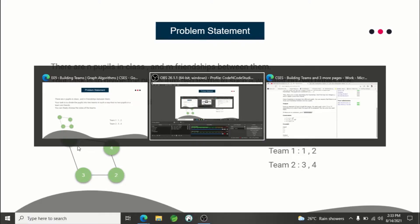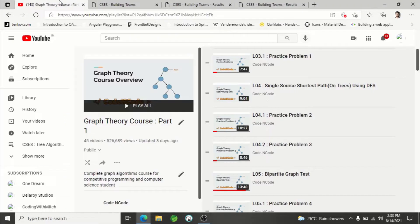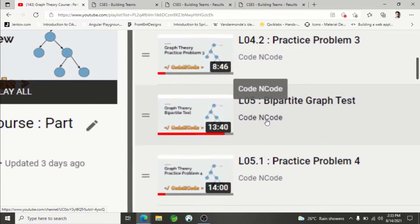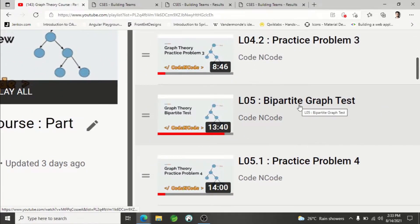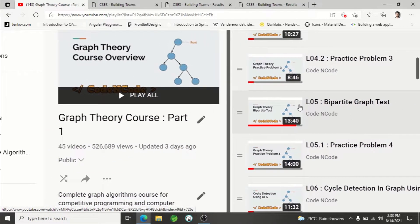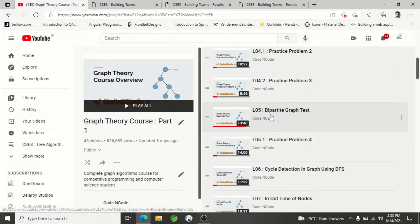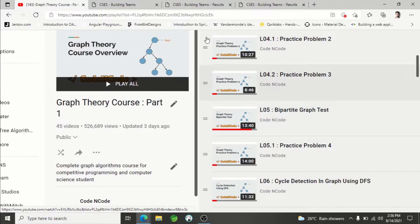If you think about it, you will see that this actually is asking to check whether the relationship graph is actually bipartite or not. If you do not know what is bipartite, or if you do not know how to check that, I would highly recommend you to go through the graph theory course part one.